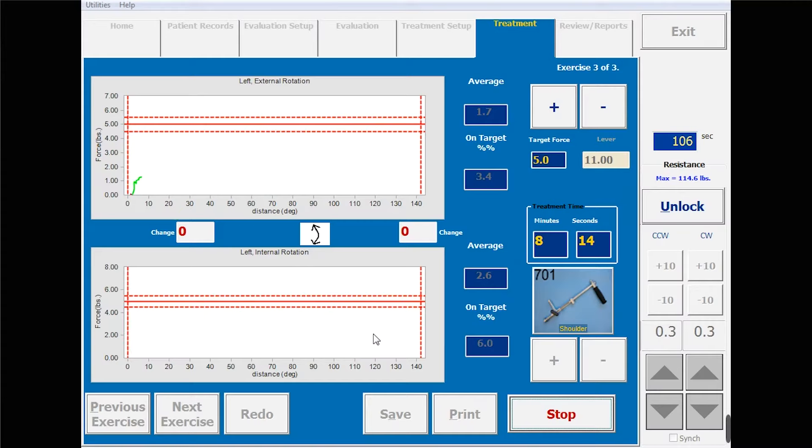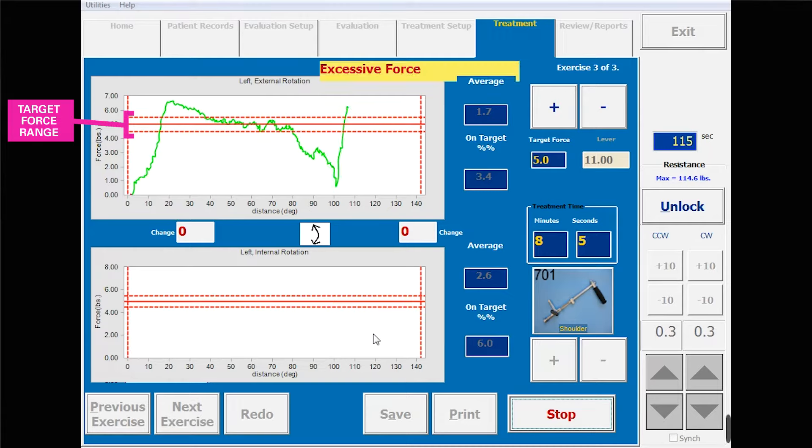That means you're also improving neuromuscular control, strength through range, stability, and overall endurance. You accomplish this by assigning a visual target range that the client tracks and responds to in real time.